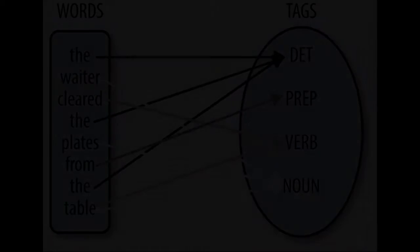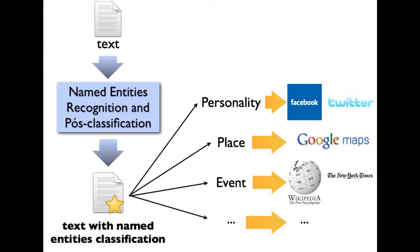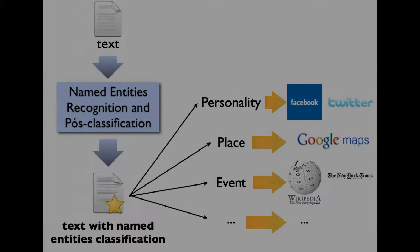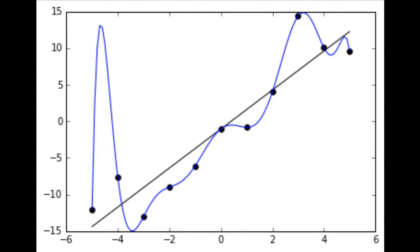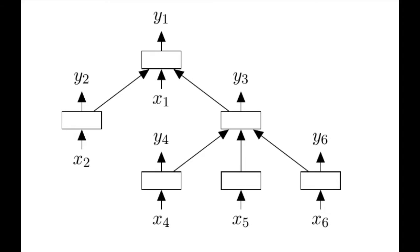We will also look at some classical NLP problems like parts-of-speech tagging and named entity recognition, and use recurrent neural networks to solve them. You'll see that just about any problem can be solved using neural networks, but you'll also learn the dangers of having too much complexity.